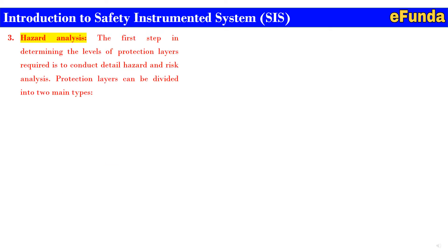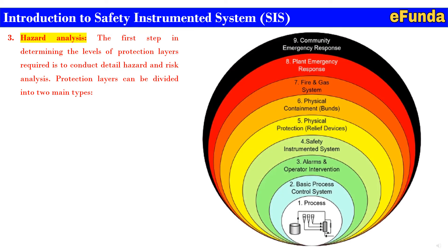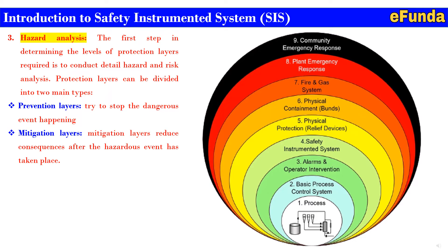The first step in determining the levels of protection layers required is to conduct a detailed hazard and risk analysis. Protection layers can be divided into two main types. As shown in the figure, the layers are: (1) process, (2) basic process control system, (3) alarm and operator intervention, (4) safety instrumented system, (5) physical protection — relief devices, (6) physical containment, (7) fire and gas system, (8) plant emergency response, and (9) community emergency response. The two types are: prevention layers, which try to stop the dangerous event from happening, and mitigation layers, which reduce the consequences after the hazardous event has taken place.